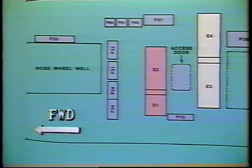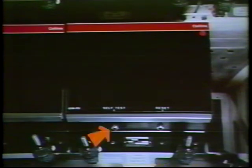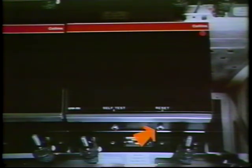The Symbol Generators are mounted on the E-2 rack in the main equipment center. A test switch on the front of each Symbol Generator provides a test pattern for checking the EADI and EHSI system performance. Next to the test switch, a reset switch is used to reset the byte fault memory.